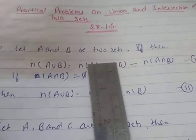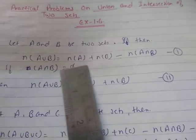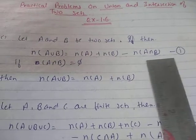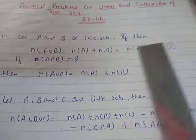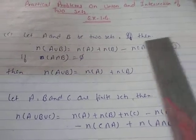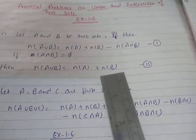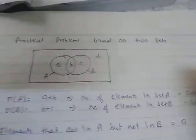If A and B are two sets, then n(A∪B) = n(A) + n(B) - n(A∩B). If A∩B is empty, that means A and B are disjoint sets, then n(A∪B) = n(A) + n(B). Now let me explain with the Venn diagram.